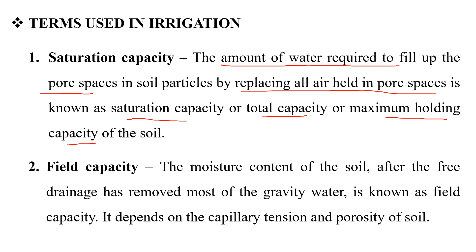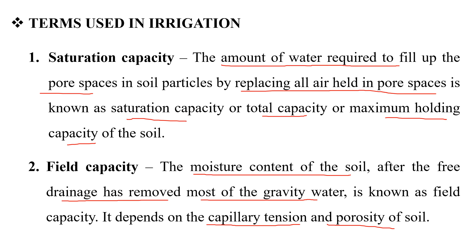The next one is field capacity. Field capacity is the moisture content of the soil after free drainage has removed most of the gravity water. This field capacity depends on the capillary tension and porosity of the soil.